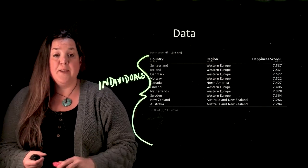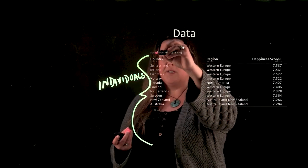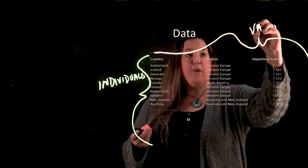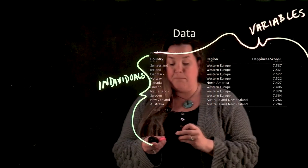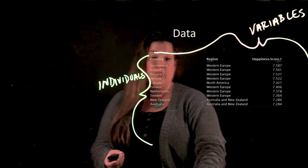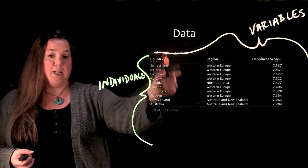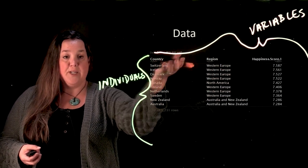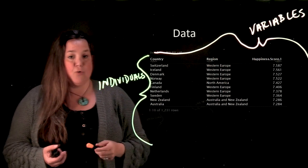Then in this table or data set, you can see that we have different columns. These columns here are what would be referred to as variables. Now, in statistics, we call variables the piece of information that you're interested in. So here, we have three variables that are being represented, each having their own column. And that piece of information here is going to be what country it is, then it's going to be the region, and then it's going to be the happiness score.